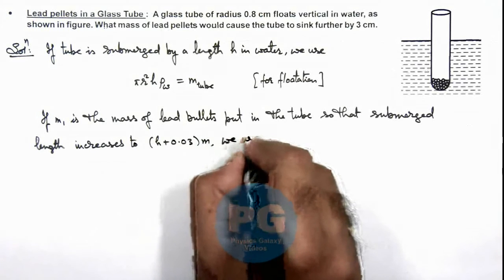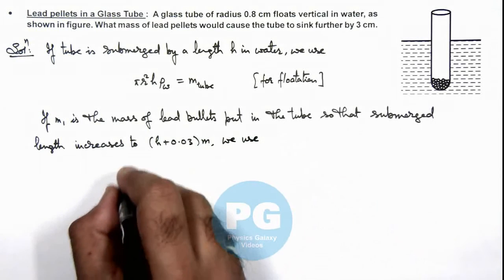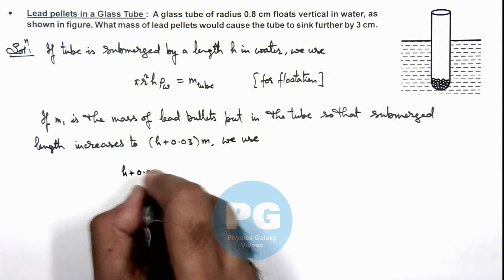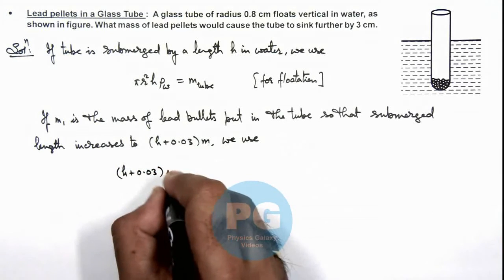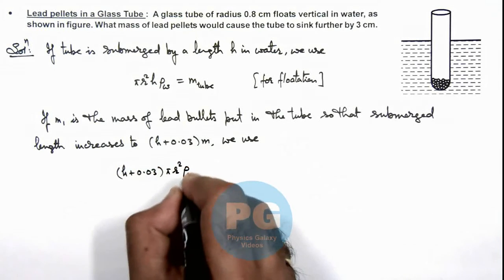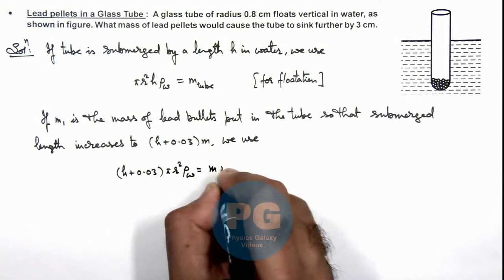Then here we use (h + 0.03) times πr²ρw should be equal to m plus m₁.